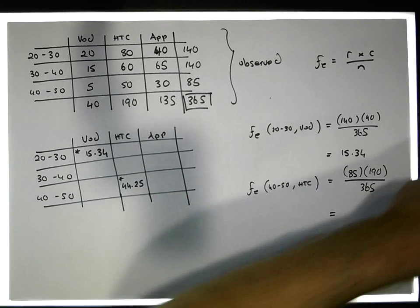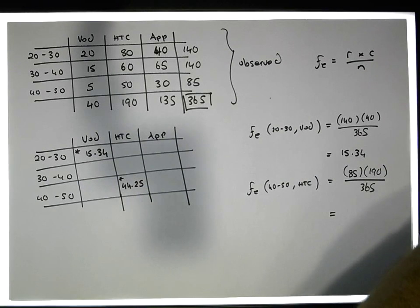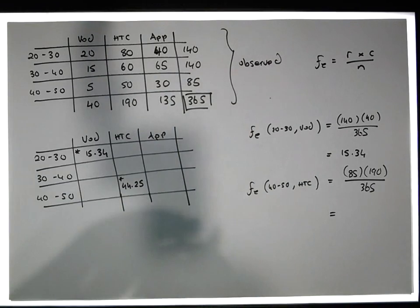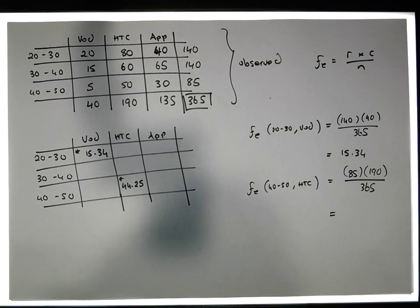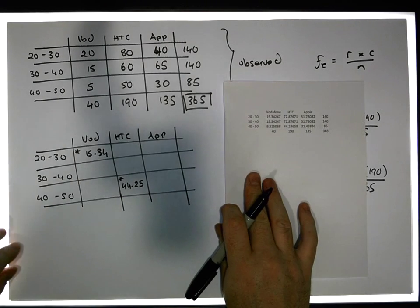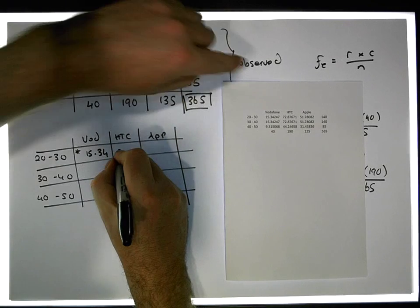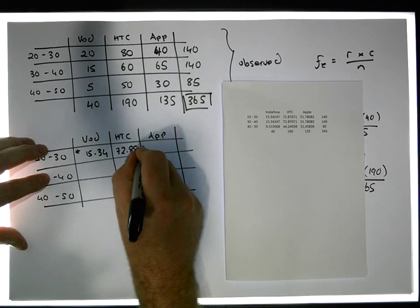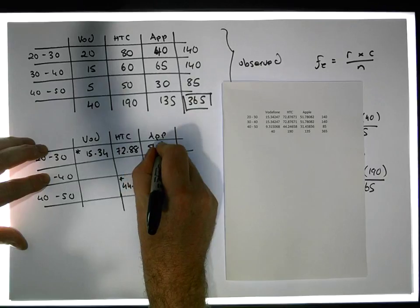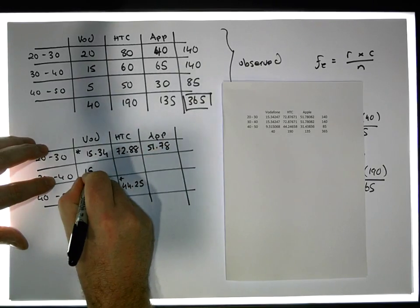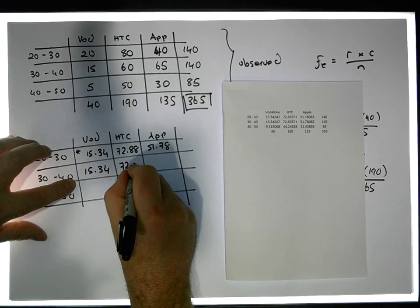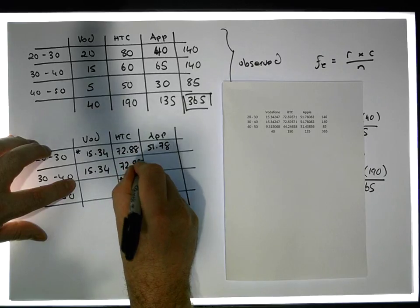I've already calculated the rest of the expected frequencies using Excel, so I'll fill them all in to two decimal places. The remaining values are: 72.88, 51.78, 15.34, 72.88, 72.88, and 51.